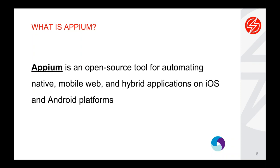Appium is the de facto standard open source tool for automating native, web, and hybrid applications. One of the key benefits of Appium is that it fits both iOS and Android — the dominant platforms in the mobile space. Both iOS and Android are fully supported for native applications, web applications, and hybrid applications.